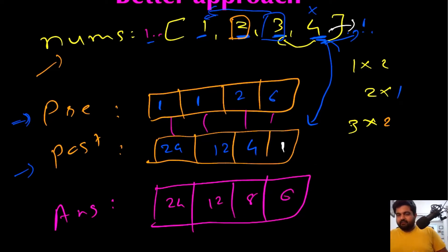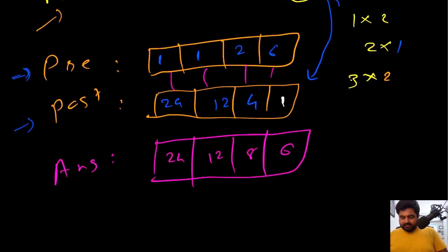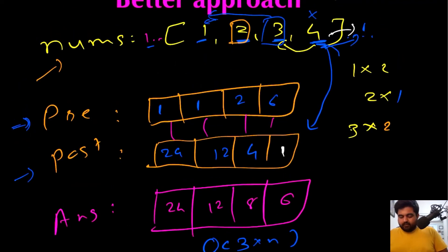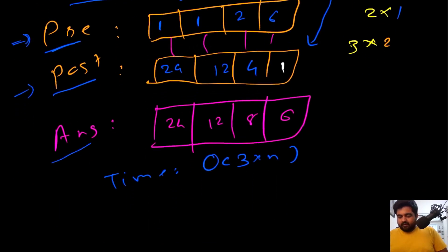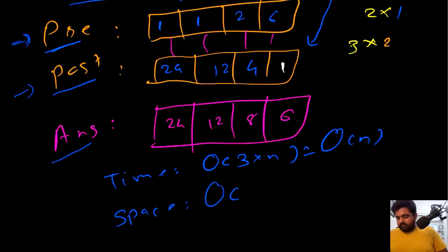This prefix/postfix solution works perfectly. The time complexity is O(3n) — one pass to build prefix, one for postfix, and one to combine them — which simplifies to O(n). The space complexity is O(n) because we are creating two additional arrays. This leads us to ask: can we do better? Yes — there is a way to combine prefix and postfix into a single answer array without extra space.